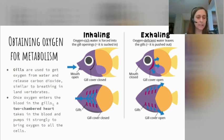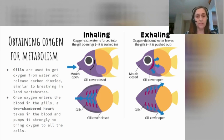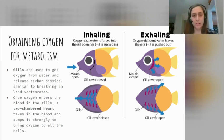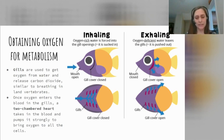Once that oxygen is in the blood in the gills, it has to get to all the cells in the body. Similar to how we use a heart to pump blood around our body, fish use a two-chambered heart. The human heart has four chambers; the fish heart has only two. That two-chambered heart pumps the blood with oxygen around the body, delivering oxygen to all the cells that need it, taking up carbon dioxide, and then when it's back at the gills, it lets that carbon dioxide go.